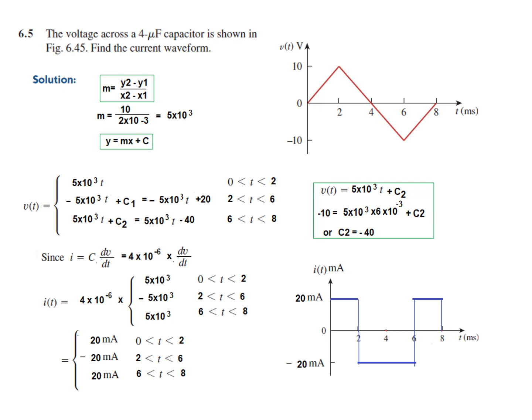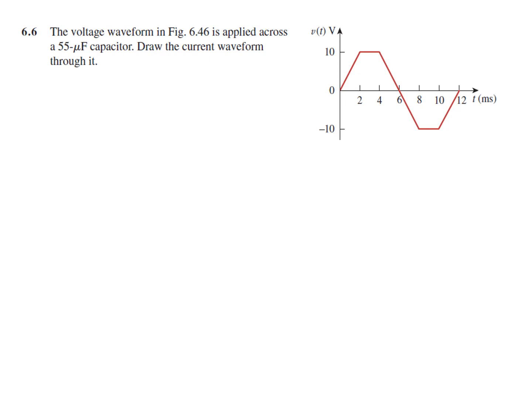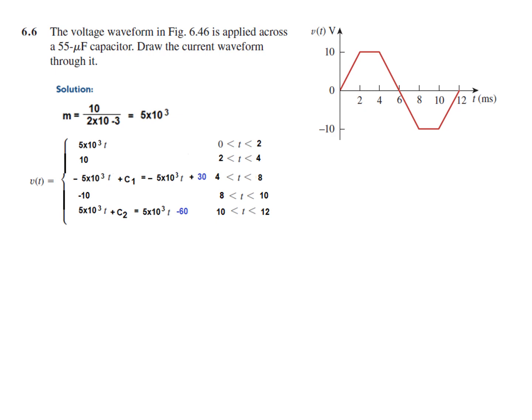If you understand this technique, you can solve all the subsequent problems. The next question is almost similar except for a flat portion. The capacitor value is 55 microfarads. We calculate the slope: the value is 10 V and the time is 2 ms, so slope = 10 / (2 × 10⁻³) = 5 × 10³. The first segment going up is 5 × 10³ × t. The second segment from 2 to 4 ms is constant, so the slope is 0 and the voltage is just the constant 10.